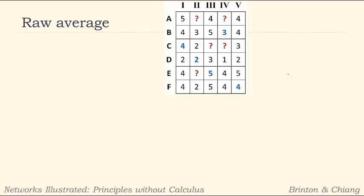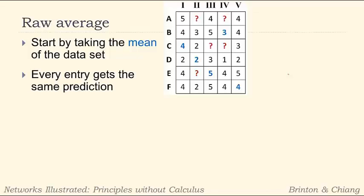The first thing we're going to try to do is really simple. We're just going to take a raw average or the mean of the dataset. As you can probably guess, every entry is going to get the same exact prediction.